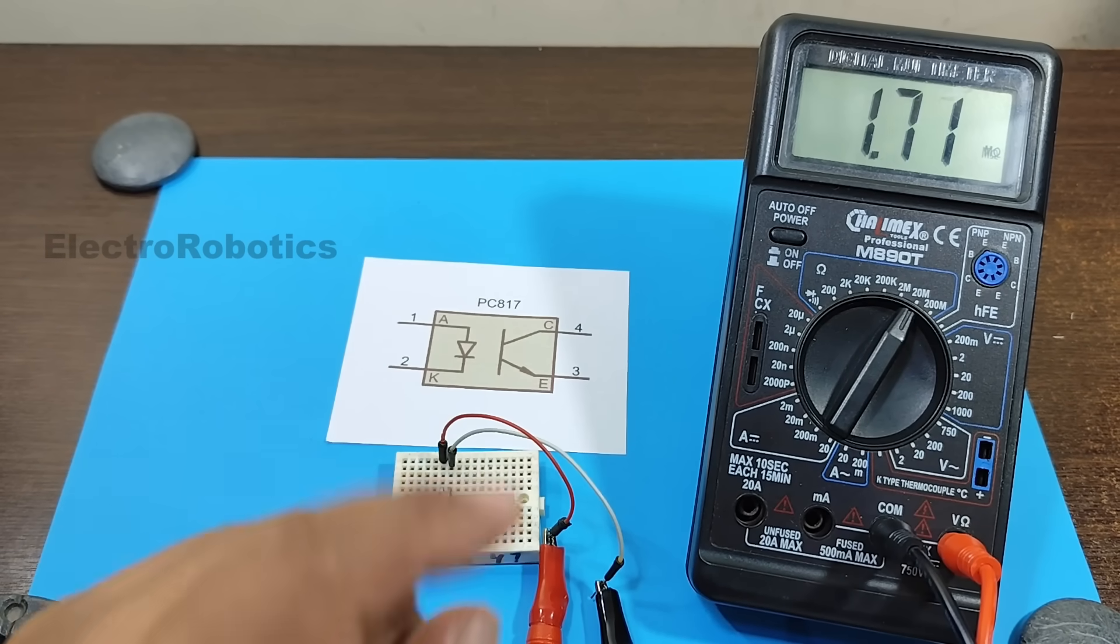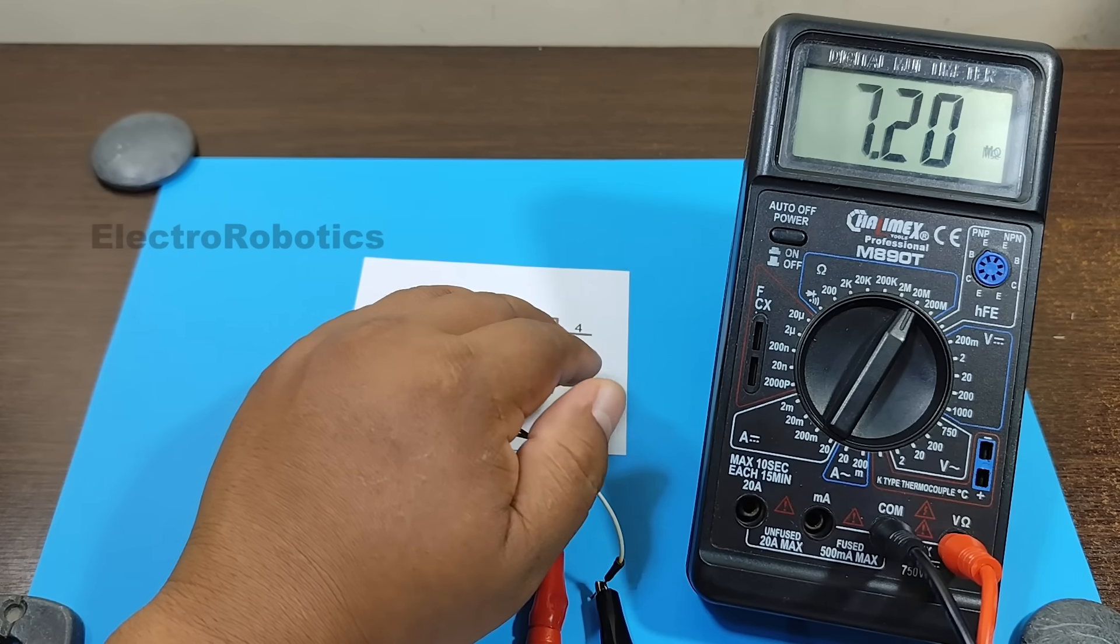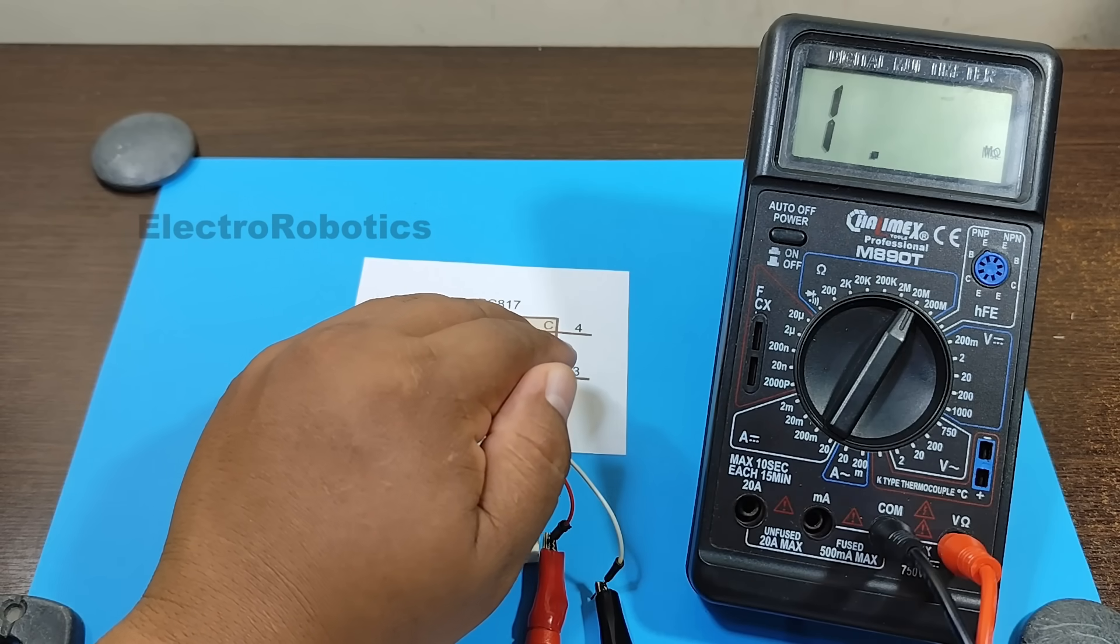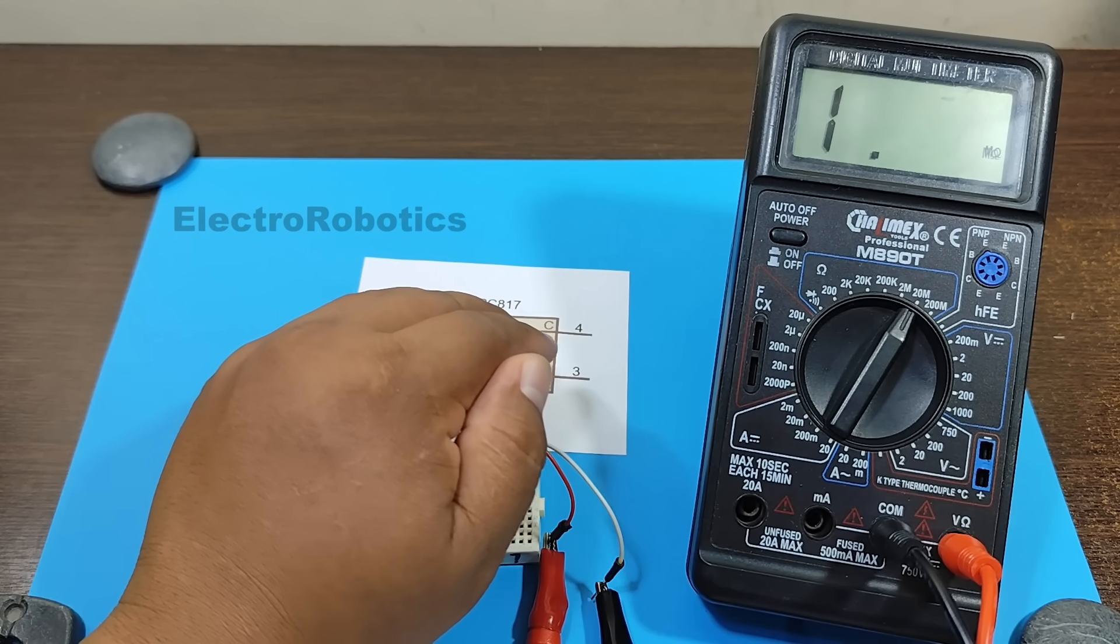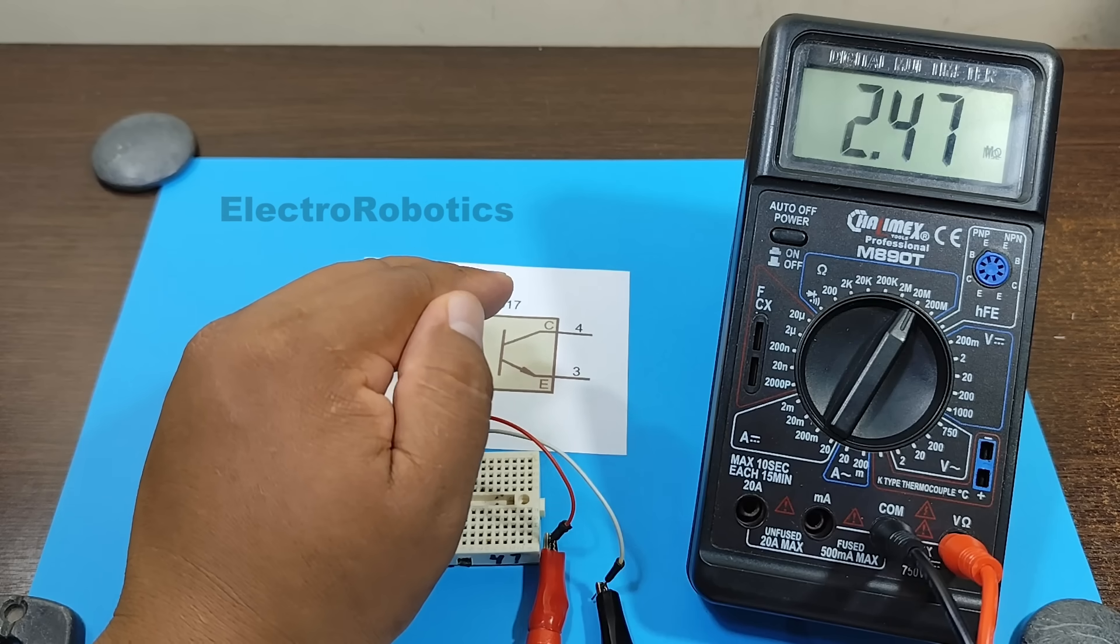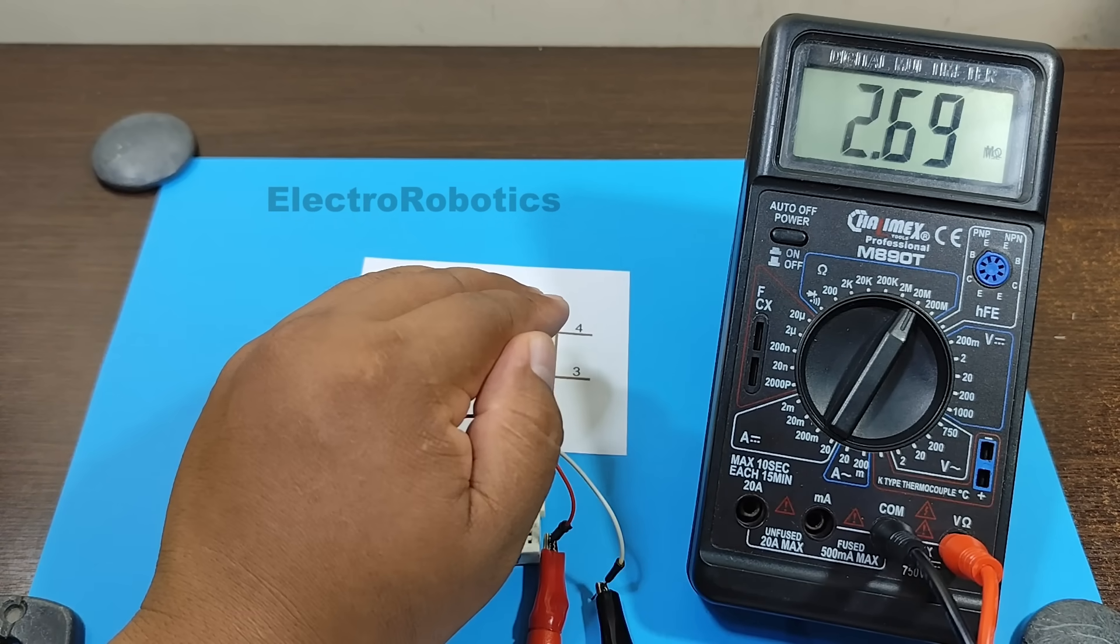However, observe the following. As you can see, the darker it is, the greater the resistance. That is, the optotransistor is currently working as a variable resistor.